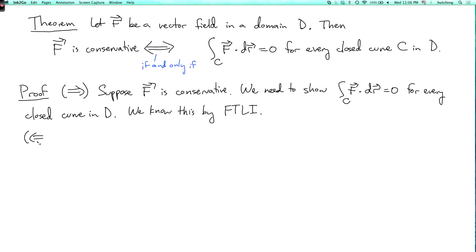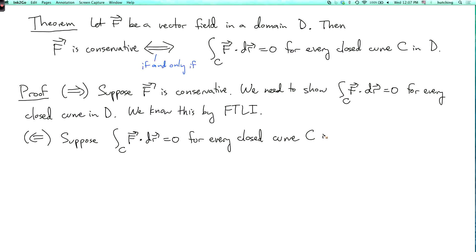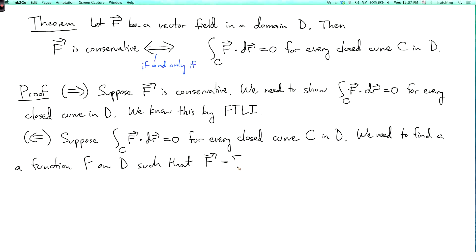Now the other half of the proof: we want to go the other way. Suppose the integral of f along every closed curve is 0 — then we need to show f is conservative. This means we need to find a potential, that is, a function lowercase f on the domain such that the vector field f is the gradient of lowercase f.